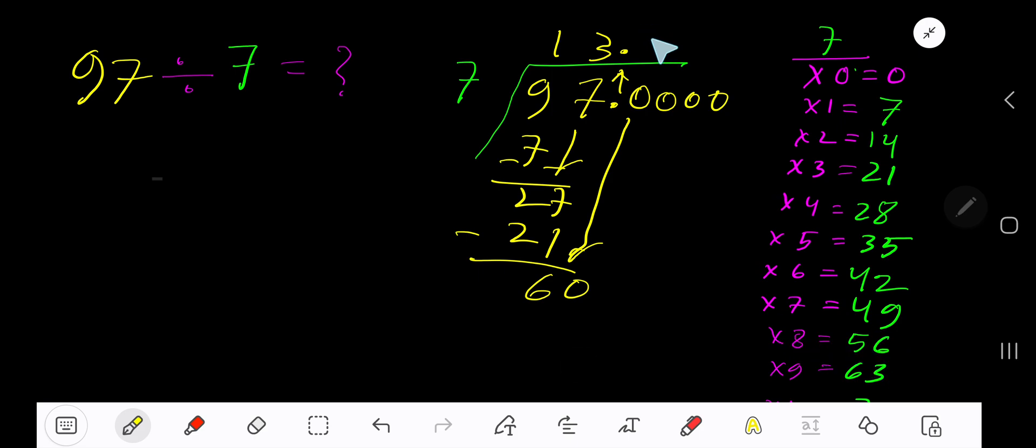8 times 7 is 56. Subtract. You are getting 4. Bring down another 0. 7 goes into 40 how many times? 6 times would be 42, which is greater, so 5 times. 5 times 7 is 35.